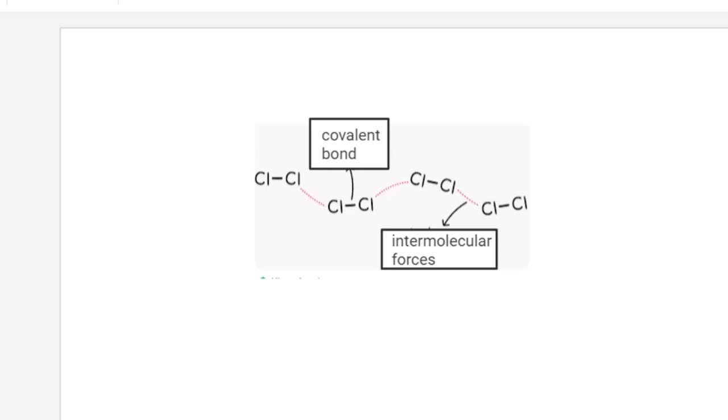So here is a question. Covalent bonds are strong and hard to break. But why do most covalent compounds have low melting and boiling points?